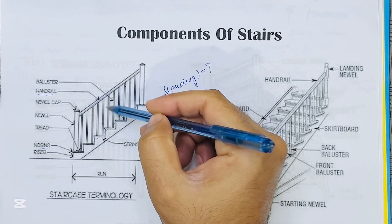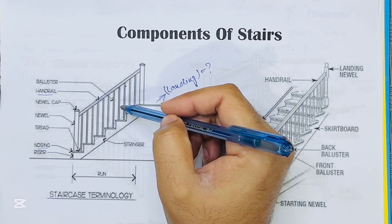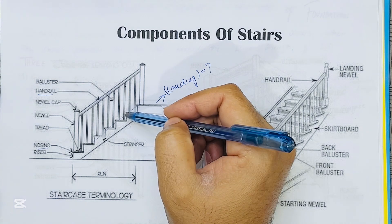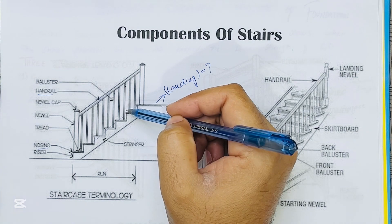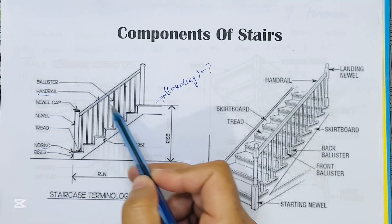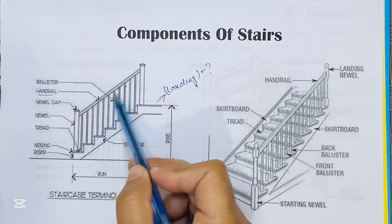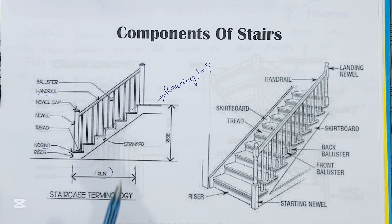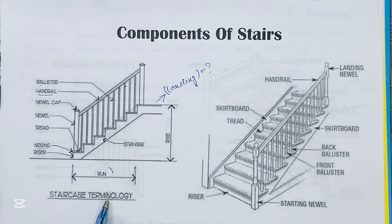These are balusters. Balusters are individual vertical members made of timber, metal, or masonry, and fixed between the string and handrail to provide support to the handrail. The horizontal distance of stairs is called run. Run is the total length of stairs in the horizontal plane, including the lengths of landings, known as the run of the stairs.